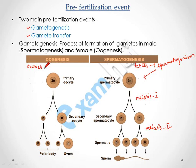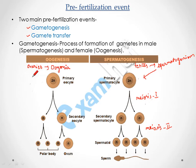In oogenesis, the germ cell in the ovaries is called oogonia. The oogonia are formed inside the female body before the birth of the female. The oogonia develop into the primary oocyte at the time of puberty, and the primary oocyte then enters meiotic division.